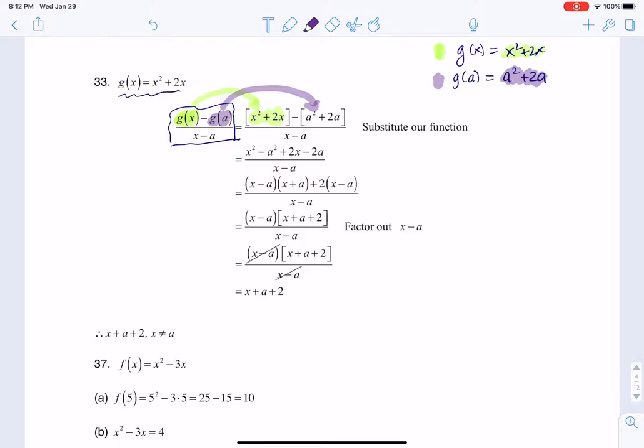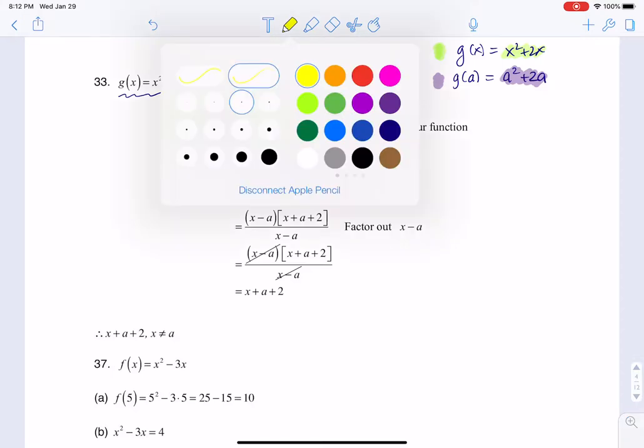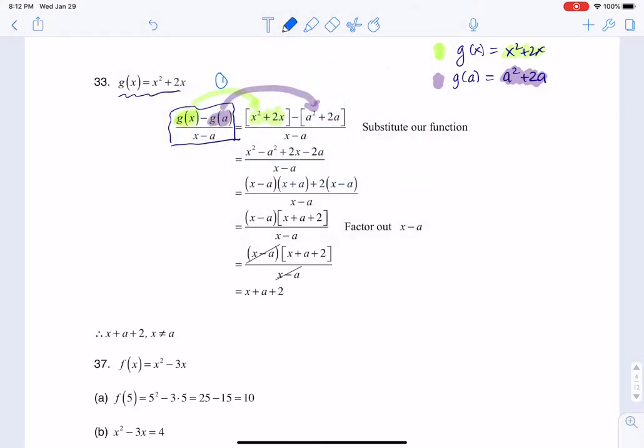So what I'm doing from step one to step two is I'm substituting. So instead of writing this general g function, I'm putting in our particular functions here.